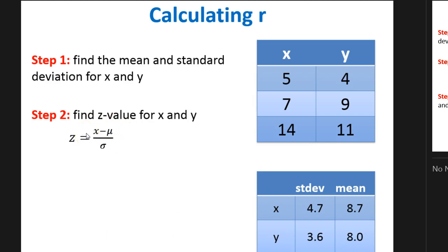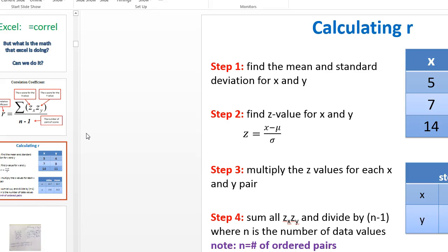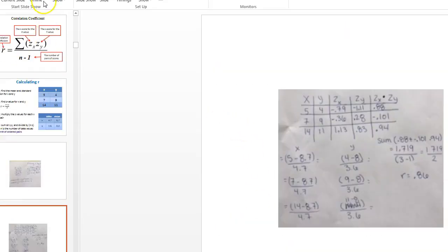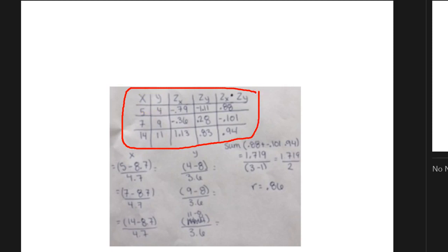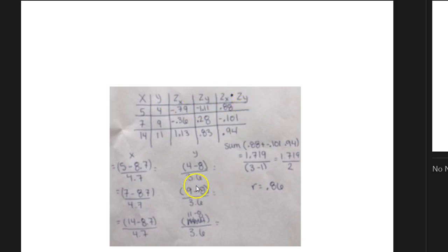I'm going to show you what I did. Since this is to find the z-value for x and y, I made another chart. I put my x and I put my y, then I found my z-scores for x and my z-scores for y. Then I took each z of x and multiplied them — though we're getting a little ahead of ourselves. Let's look at the first x, which is 5: I did 5 minus 8.7.